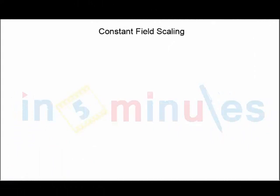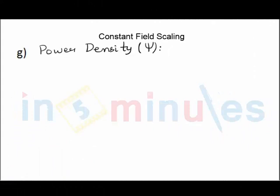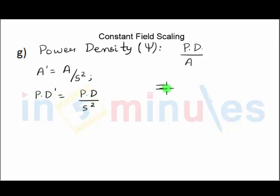Let's go ahead and see the last term of this clip, which is power density. Power density is given by power dissipation upon area. We already saw that area after scaling is reduced by S square, and we also saw that power dissipation after scaling, be it instantaneous or static, is also reduced by S square. So power density technically is power dissipation upon S square into area upon S square, so I'm taking S square up and this gets cancelled out.